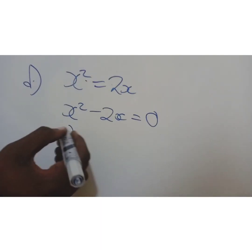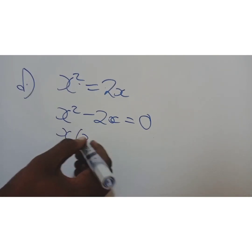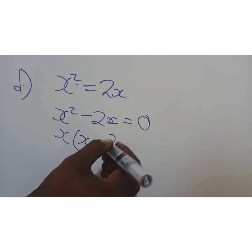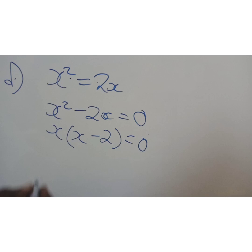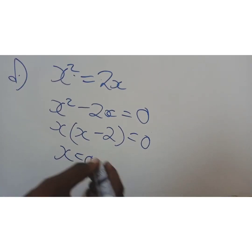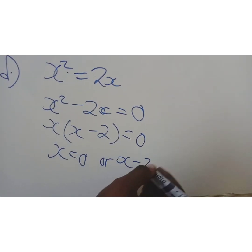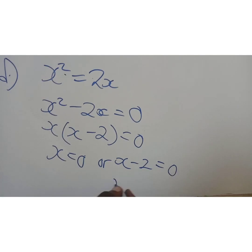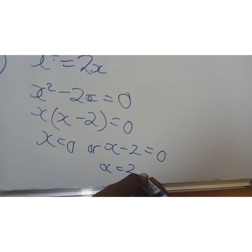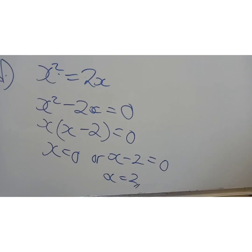So here, what's common is x. So x minus, here we have 2, equals 0. So x equals 0. Or x minus 2 equals 0. So x equals 2. Let's go to further examples now.